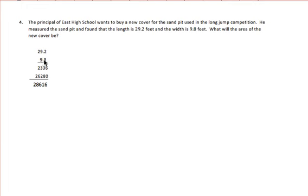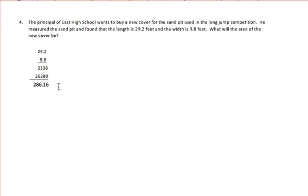Since we have two digits in our second factor, we'll have two rows of multiplication, and our second row will need a zero as a placeholder to the far right. We add our columns up and get 28616. Our decimal point needs to be placed two places from the right because the total number of decimal positions in our factors is two — one in each number. Our final answer is 286 and 16 hundredths square feet.